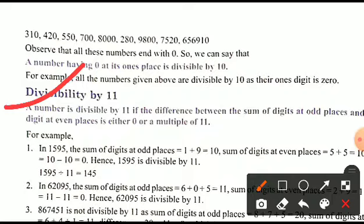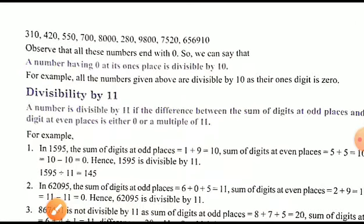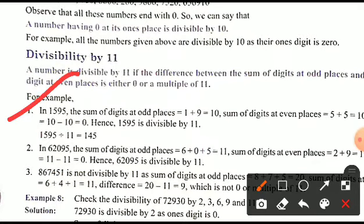Divisibility by 11: a number is divisible by 11 if the difference between the sum of digits at odd places and the sum of digits at even places is either 0 or a multiple of 11. For example, in 1595 — sum of digits at odd places (1 + 9) = 10, sum of digits at even places (5 + 5) = 10, and the difference is 10 − 10 = 0, so 1595 is divisible by 11.